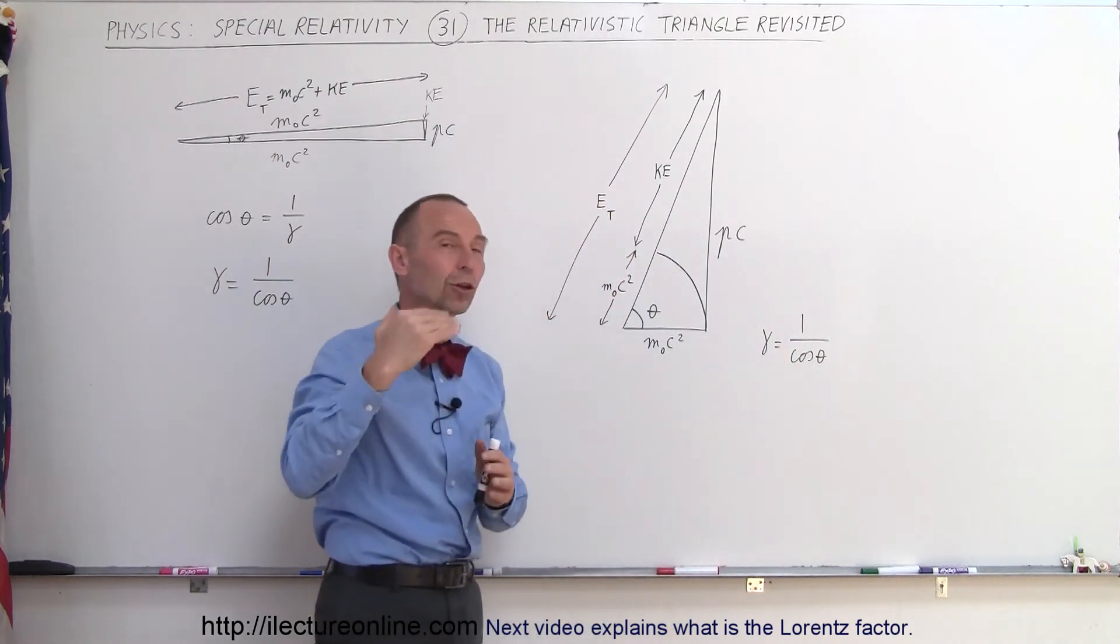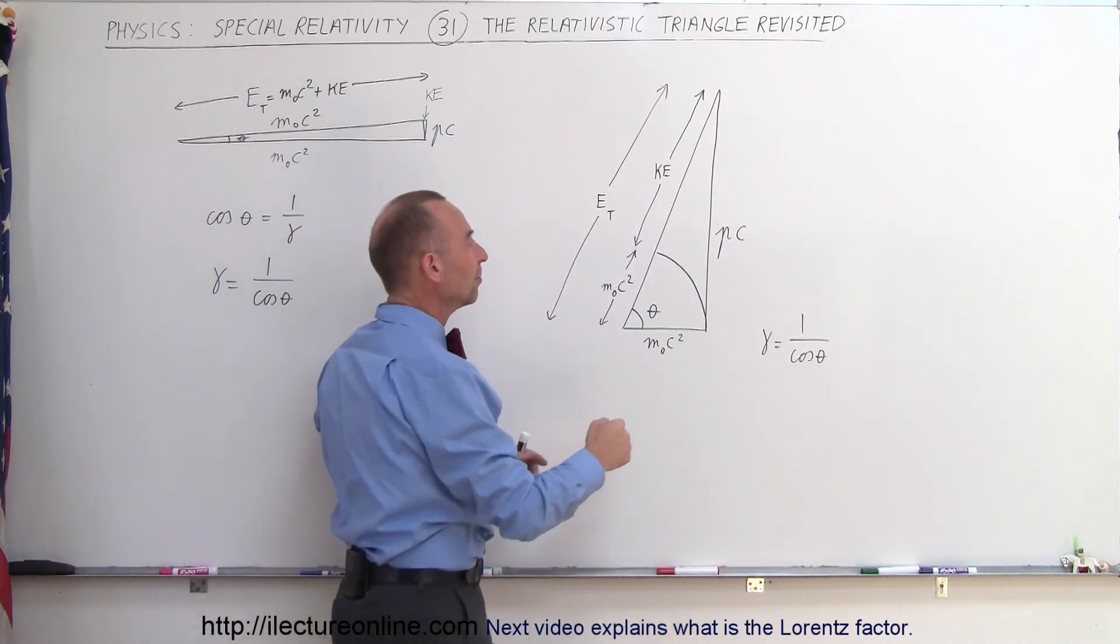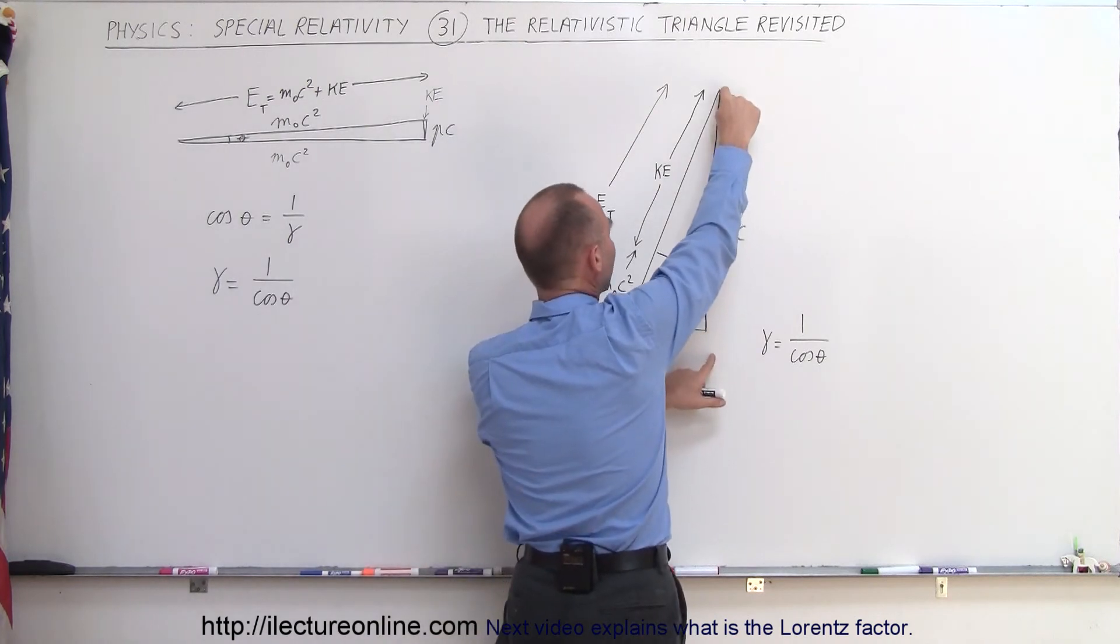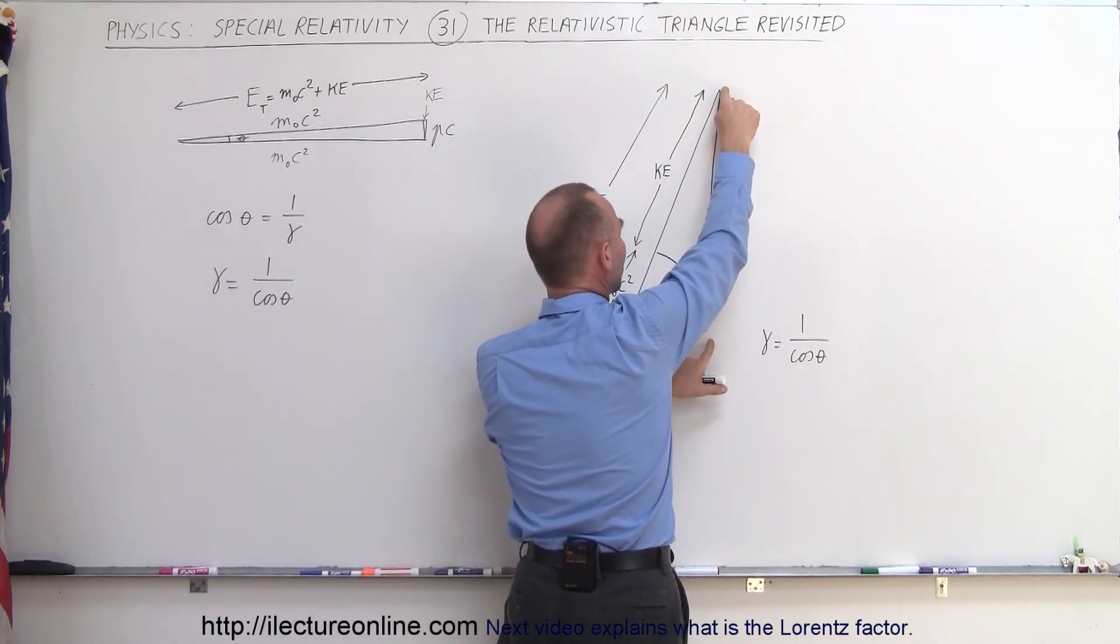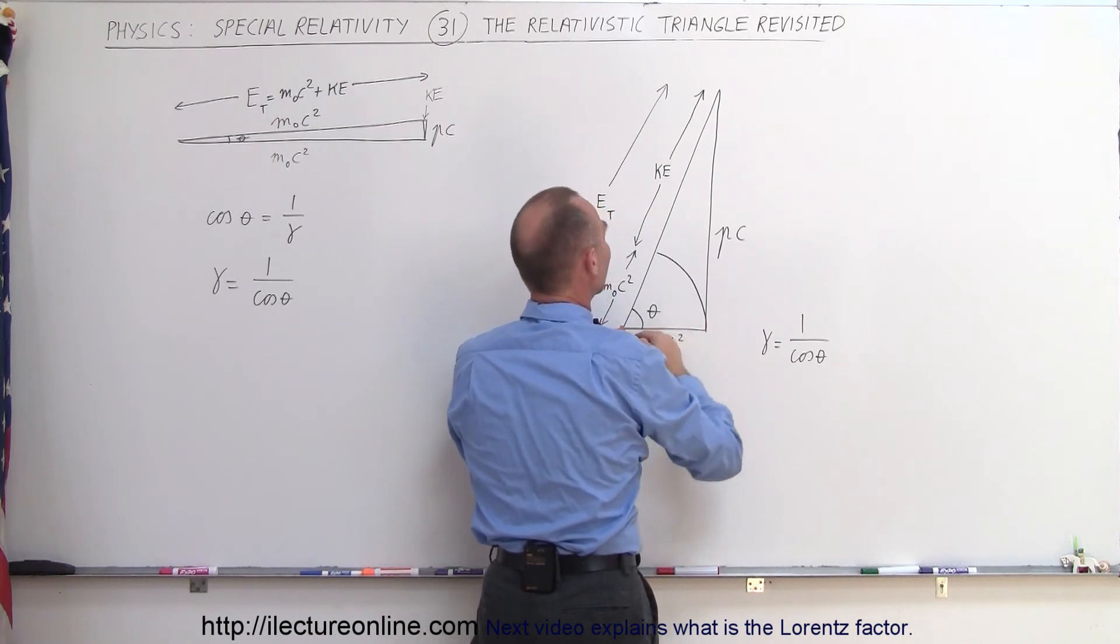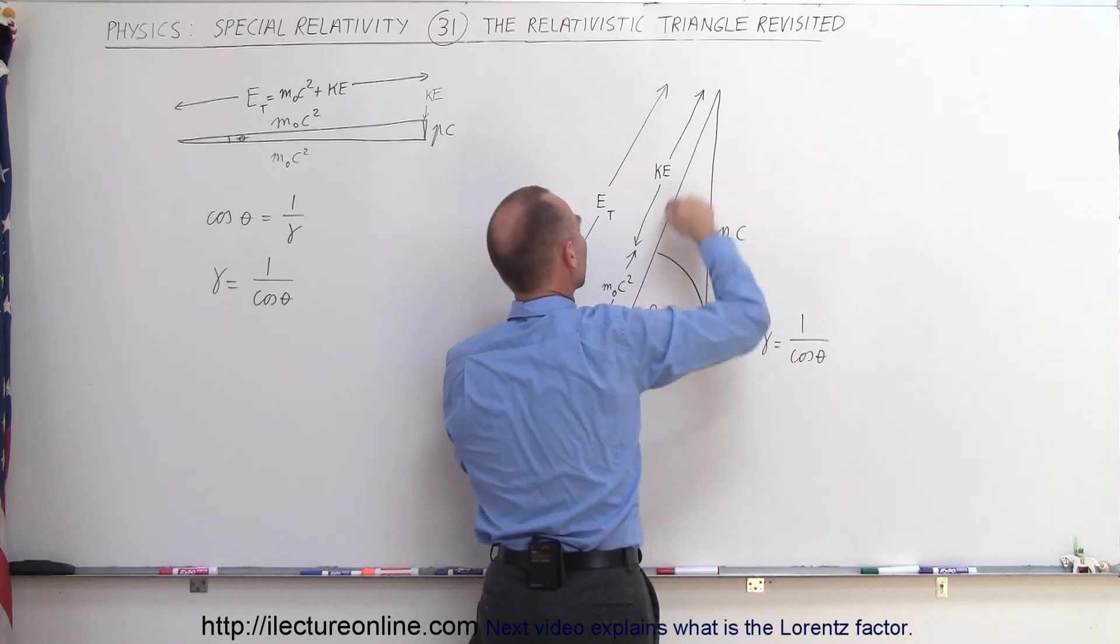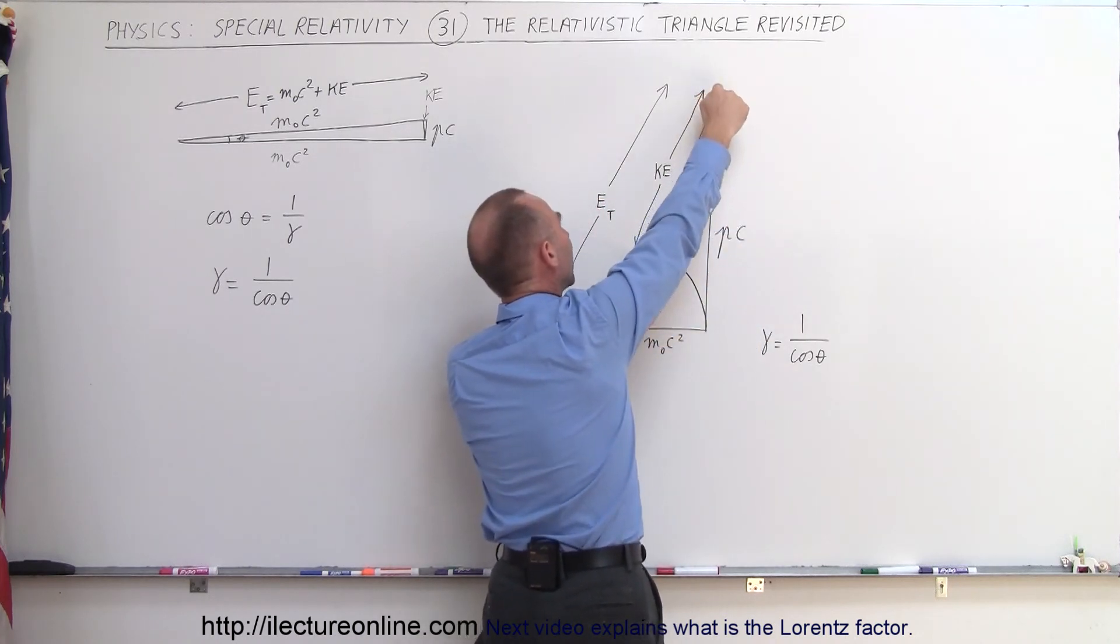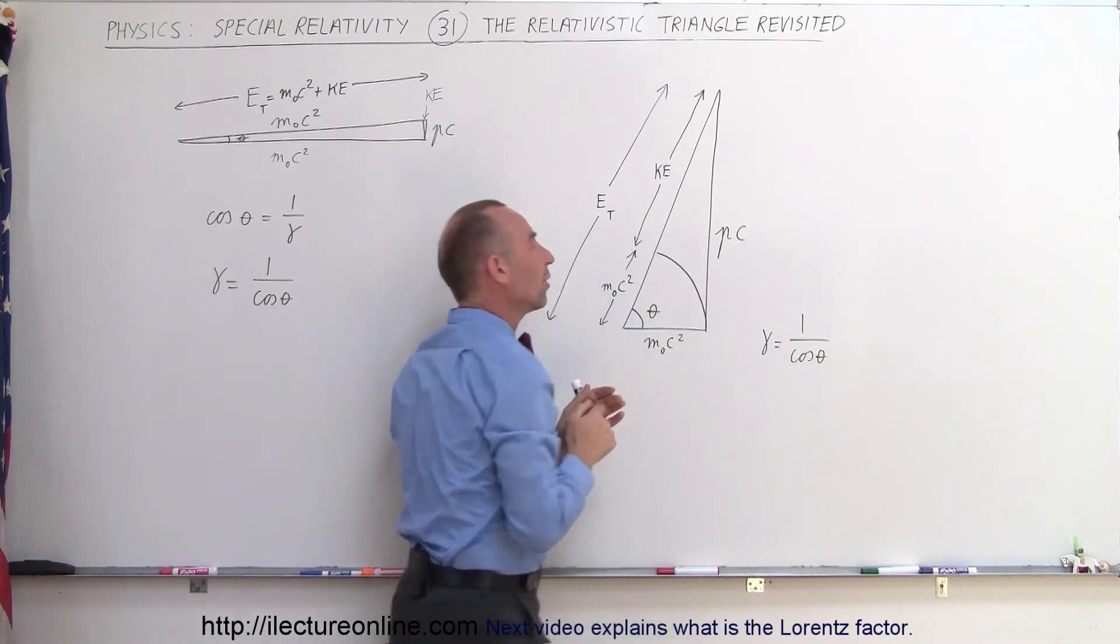and you can see that gamma becomes a very large number. And that is evident by knowing how the momentum times the speed of light is a much greater quantity than the rest mass energy, and therefore you can see that the portion making up the total energy is mostly kinetic energy and not as much rest mass energy.